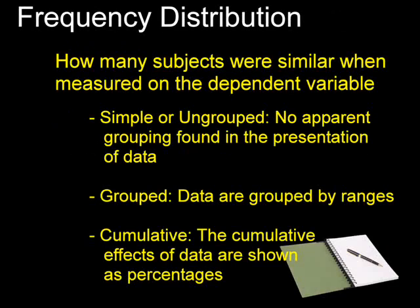Again, we're going to deal with five things. And the first one is going to be frequency distributions. So let's look first at the frequency distribution. Frequency distributions show how many subjects were similar in the sense that measured on the dependent variable that's being studied, they ended up in the same category.